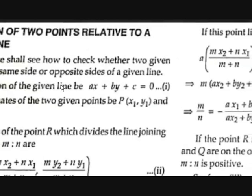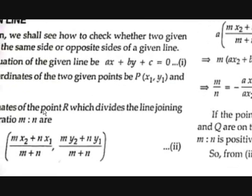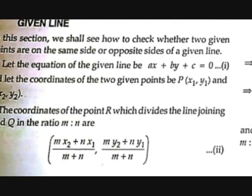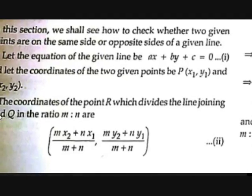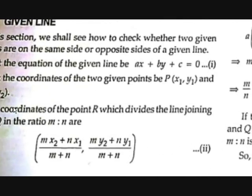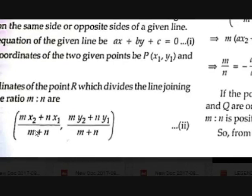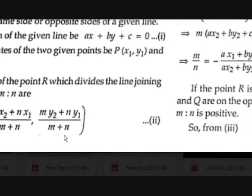Let there be a line of equation AX + BY + C = 0, and there are 2 points P and Q. The coordinates of point R — there is a point R which divides the line joining P and Q. This is just a formula for finding point R such that it divides the line joining any two points in ratio M:N. That is (MX2 + NX1)/(M+N) for the X coordinate, and (MY2 + NY1)/(M+N) for the Y coordinate.